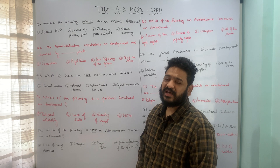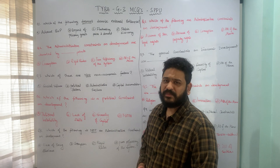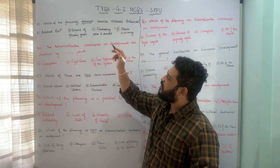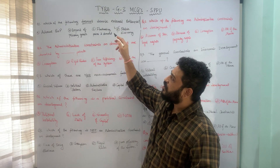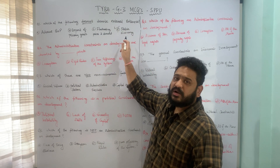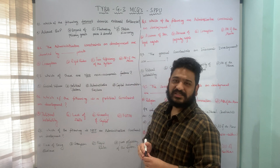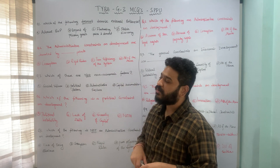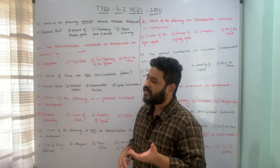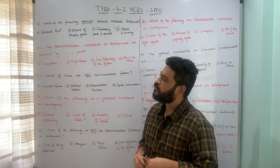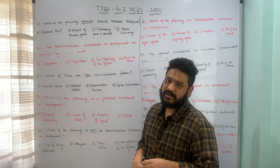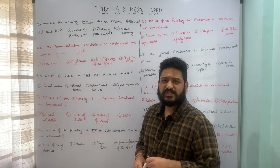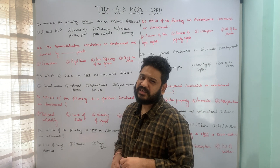The fourth option is not an external bottleneck because it refers to a stable economy. Therefore, the correct option is D — stable economy does NOT denote an external bottleneck. The other three — adverse BOP, exports of primary goods, and fluctuating prices and demand — are all external bottlenecks.